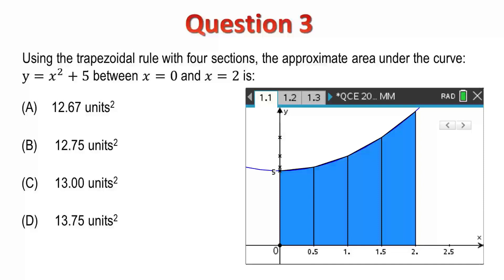Question 3. Using the trapezoidal rule with four sections, determine the approximate area under the curve of y equals x squared plus 5 between x equals 0 and x equals 2. The calculator does have the ability to determine a definite integral, but the question specifically asks for the trapezoidal rule. We can see by the diagram that the two areas, or the two results, would be very similar. The multiple choice options validate this. So, let's try and understand the trapezoidal rule.